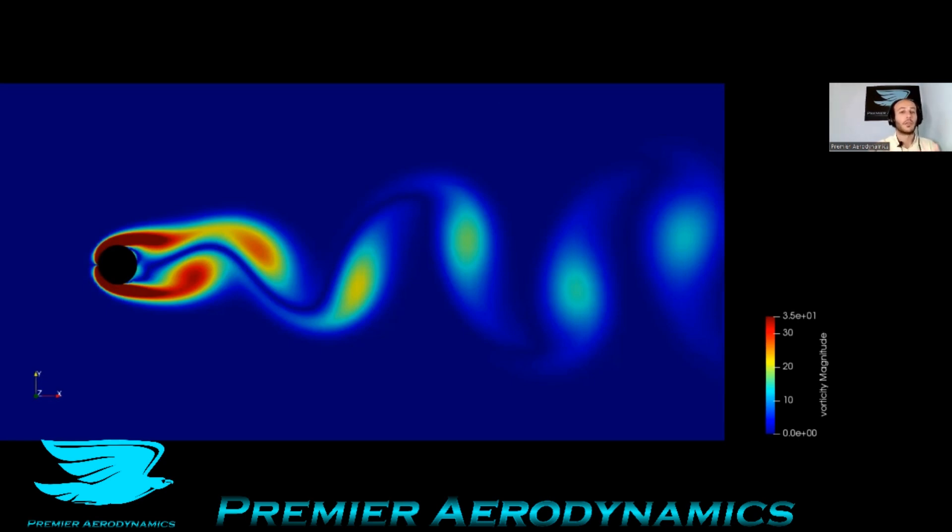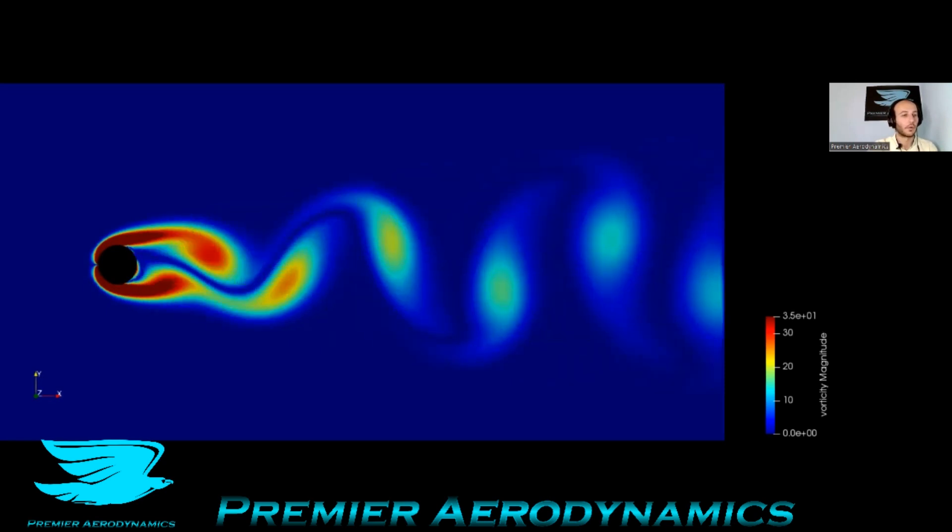And this results in this wake that we see here, where you have one vortex forming, and then the wake shifts too much past the center line, then there's this reversal, and then it flip-flops back and forth. So you can see that flip-flopping back and forth.